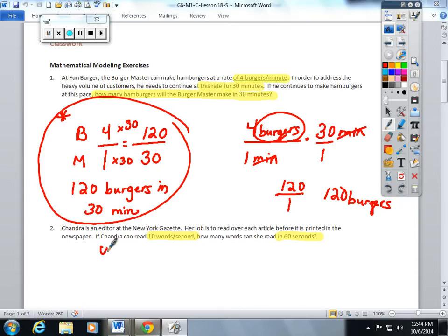Again, words per second, 10 words per one second, and I want to know how many words she can do in 60 seconds. This is times 60. Whatever you do to the bottom, you do to the top. Chandra can type 600 words in 60 seconds. I love being able to label my fractions because then I can go back to the labels.